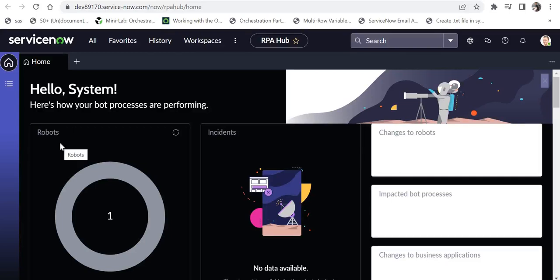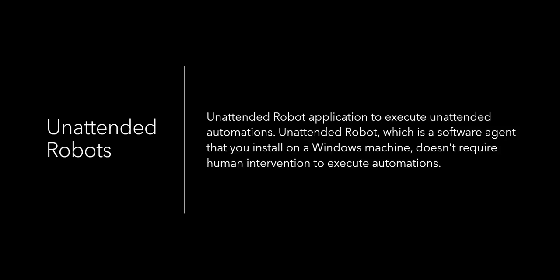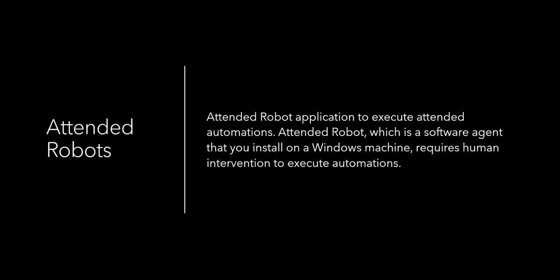Next is Unattended Robots. As the name suggests, you don't have to attend these robots — they will execute your defined workflows automatically without any human intervention. Attended Robots are the opposite: they require manual intervention. They can do all the automations defined in the workflow, but somebody has to start, review, and possibly end the process. It completely depends on how you have defined those workflows.